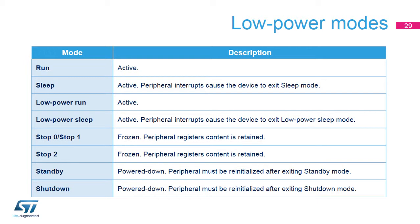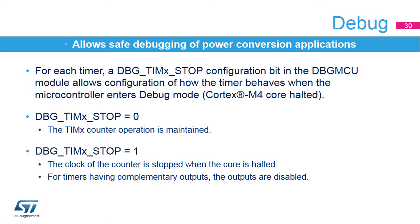The timer is active in run and sleep modes. In stop modes, the timer state and register content are preserved and the timer resumes directly when the MCU wakes up. In standby and shutdown modes, the timer is powered down and must be completely reinitialized. In debug mode, a configuration bit per timer controls behavior at breakpoints: if the debug bit is reset, the timer clock is maintained; if set, the counter is stopped when the core is halted and complementary outputs are disabled and forced to an inactive state, preventing power stage damage or motors being left in an uncontrolled state.